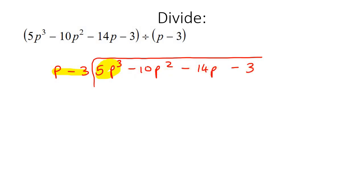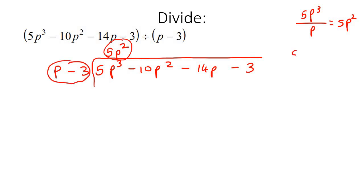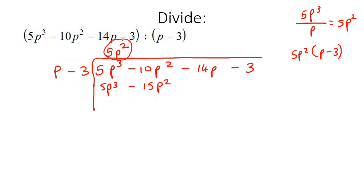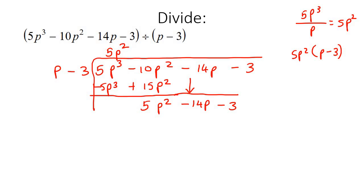The highest power here is 5p³, and the highest power in the divisor is p. So we say 5p³ divided by p, and that gives us 5p squared. We put that up at the top, then multiply it with p minus 3, giving 5p³ take away 15p². Switch the signs, then add: 5 take away 5 is 0, minus 10 plus 15 is 5p², and then bring down negative 14p and negative 3.